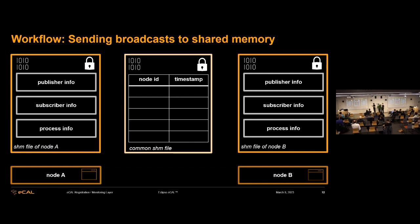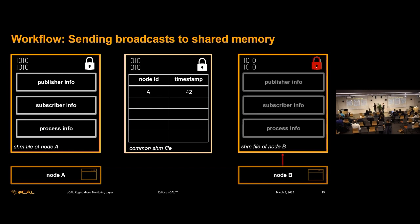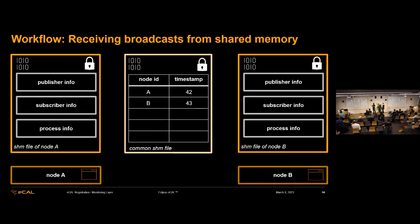To send a broadcast via shared memory: node A locks the mutex of its shared memory file, updates the respective meta-information, then locks the common shared memory file's mutex and adds an entry to it. Node B does the same — lock, update its own file, then add a new entry to the common file. To receive: node A queries the common shared memory file after acquiring a read lock on its mutex, checks if something new is available, finds node B's entry, and queries the information from node B's shared memory file. The concept is actually pretty straightforward.